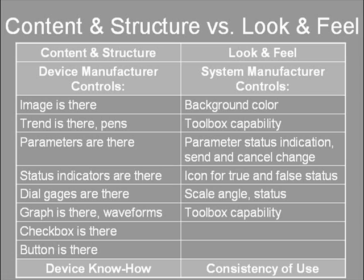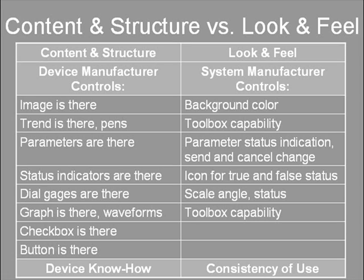It is the device manufacturer that controls if there is an image on the page or not. The system manufacturer controls if the background is white or grey. It is the device manufacturer that controls if there is a trend on the page and how many pins or values it is recording. The system manufacturer controls how its tool for pan and zoom works. It is the device manufacturer that controls which parameters are displayed on the page. The system manufacturer controls where to click to send a changed value to the device and how it is indicated the value has been changed and must be downloaded.